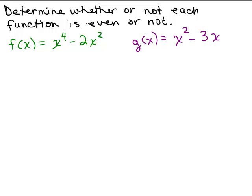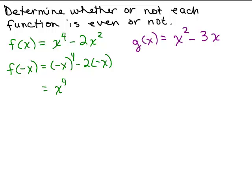Let's determine whether or not each function is even. To do this algebraically, we find F(-X) by replacing X with -X. For F(X) = X⁴ - 2X², F(-X) = (-X)⁴ - 2(-X)² = X⁴ - 2X², because a negative sign raised to the fourth power is positive, and (-X)² = X². This is exactly the same as the original function, so this is an even function.